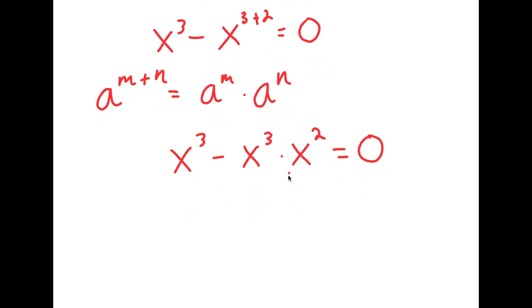Now from here, what I can do is factor out x to the power of 3 because this is in both terms. So I get x to the power of 3 times 1 minus x squared is equal to 0.